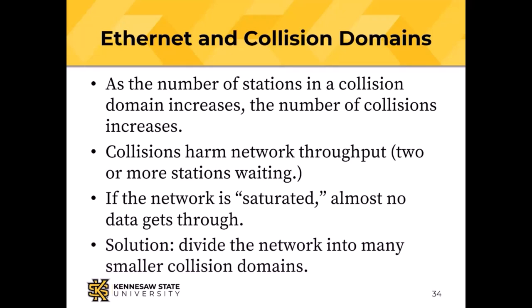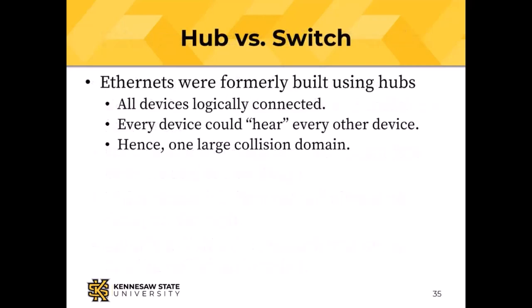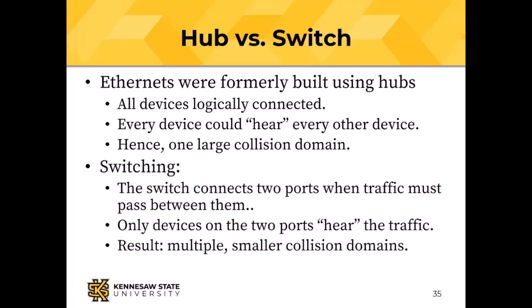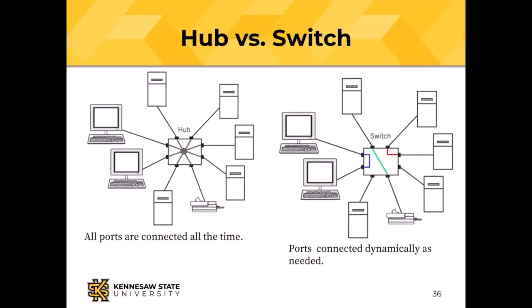The solution is to break the network into smaller collision domains using an Ethernet switch. Hubs simply connected all wires together so every device could hear every other — one large collision domain. A switch connects two ports only when traffic is needed between them, so only those two devices hear the traffic, creating many smaller collision domains. Ports get connected dynamically as needed.